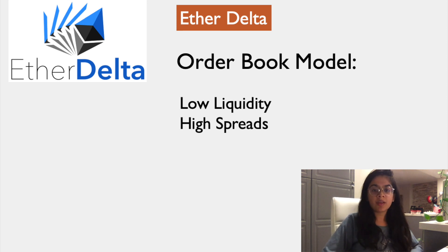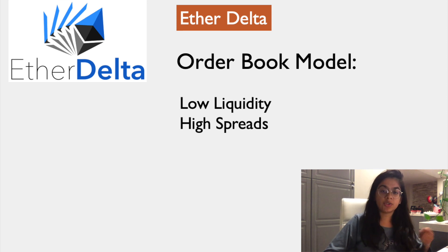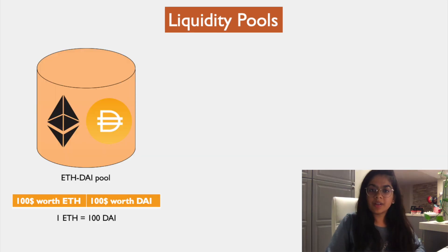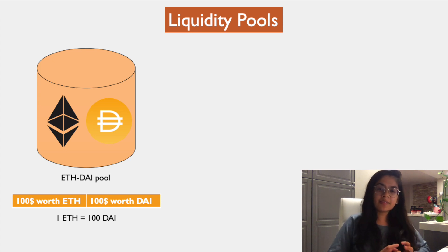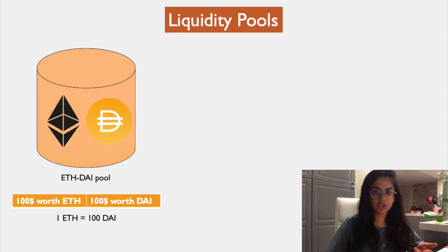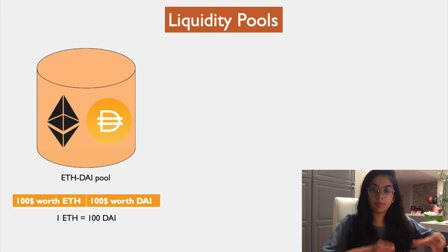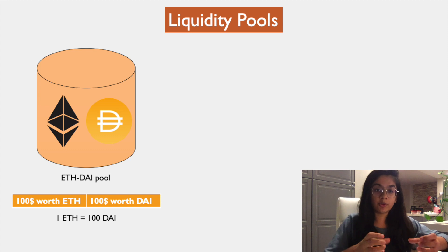People would still flock to Binance rather than using EtherDelta. So newer decentralized exchanges like Uniswap found an interesting way around this problem using liquidity pools. A liquidity pool incentivizes people to create liquidity in the exchange. For example, if one ETH is worth 100 DAI, you would put equal amounts of both — a hundred dollars worth of ETH and a hundred dollars worth of DAI.